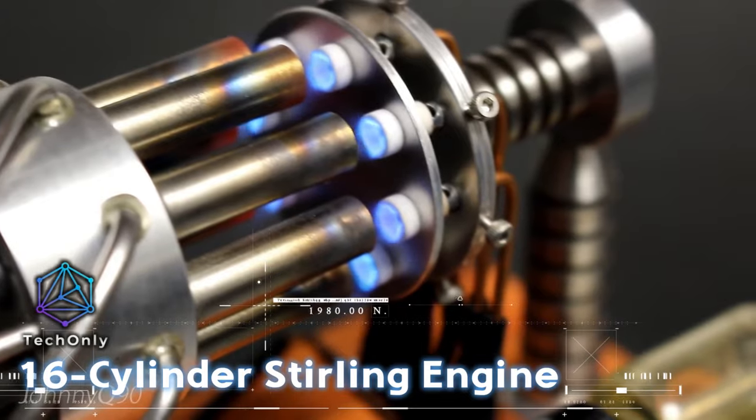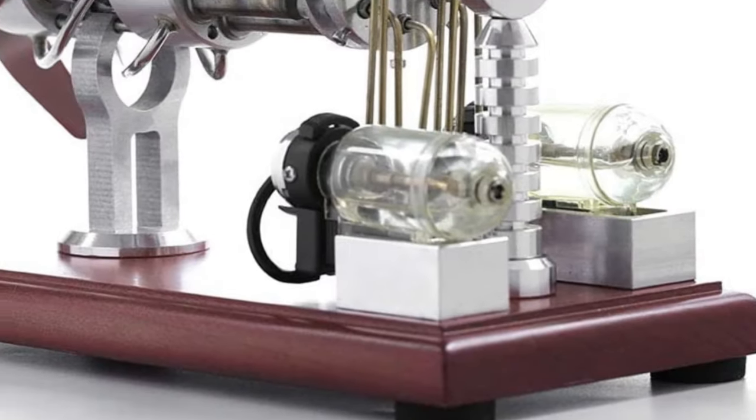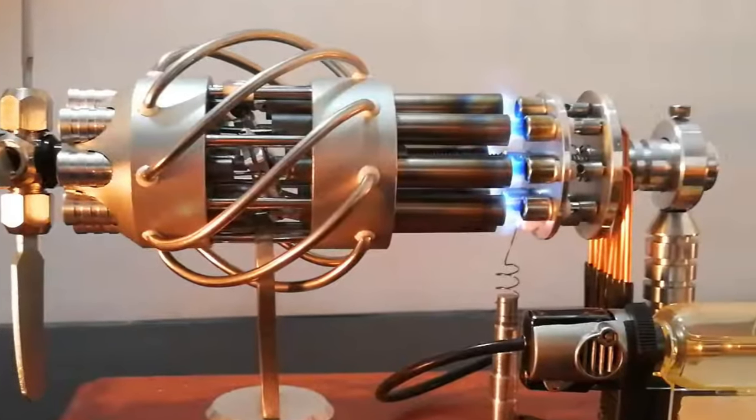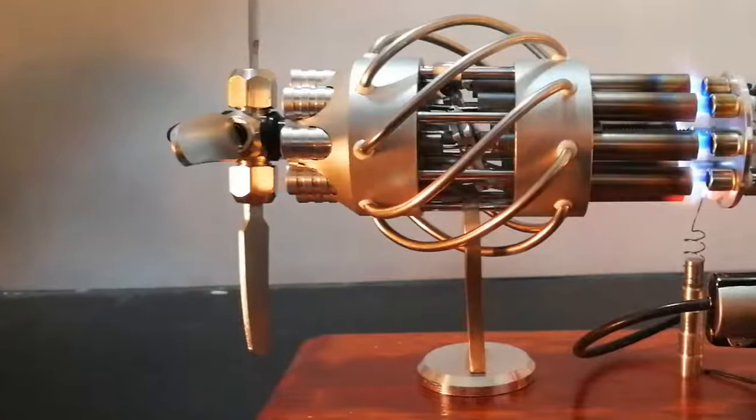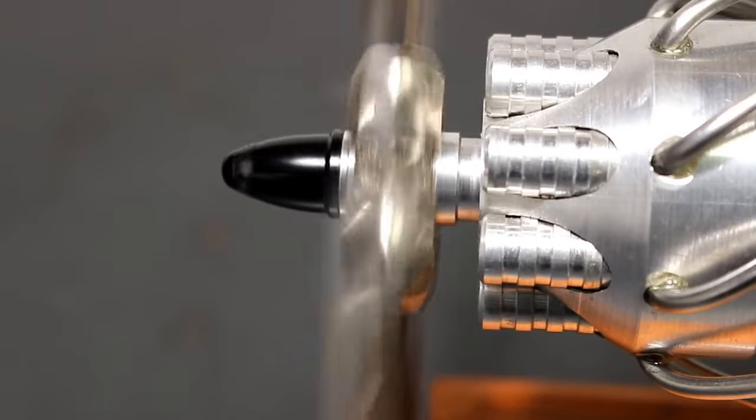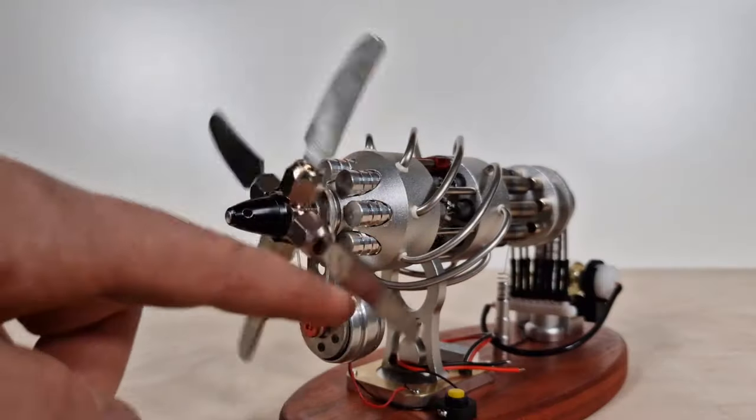The combustion of butane fuel powers this 16-cylinder Stirling engine. When the butane is ignited, the heat causes the air inside the cylinders to expand and push the pistons outward. As the pistons move, they turn a crankshaft, which is connected to a propeller or other device that can be used to generate electricity or drive other machinery.